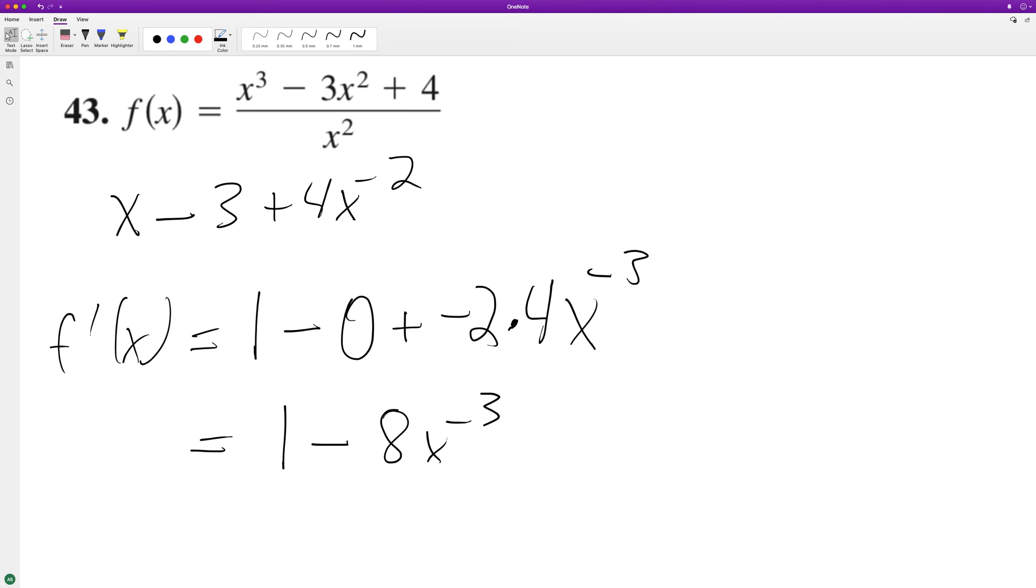So what we're going to end up with here is f prime of x is equal to 1 minus 8 over x cubed. And that's it.